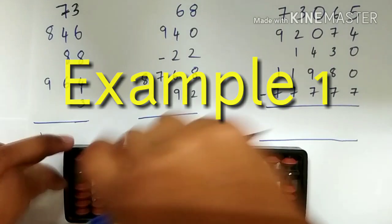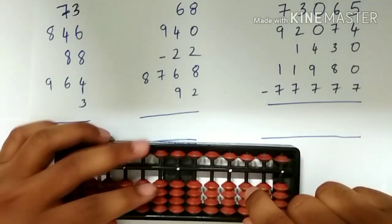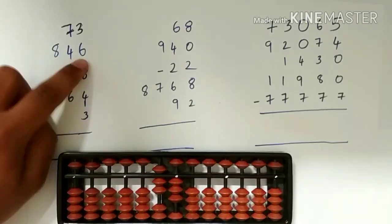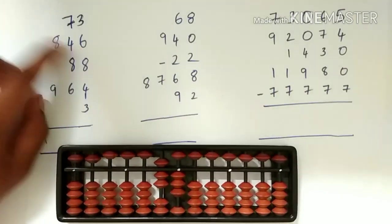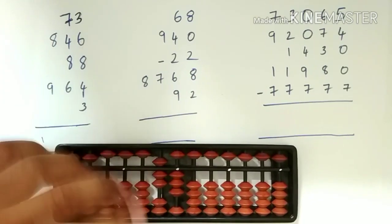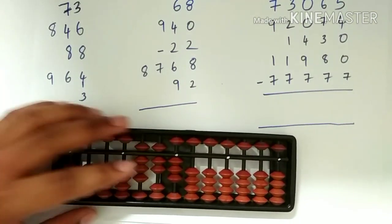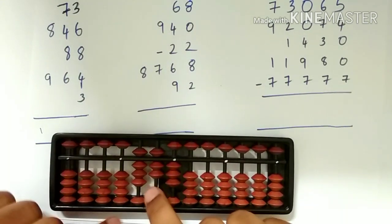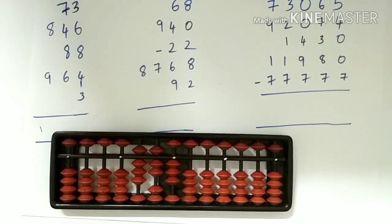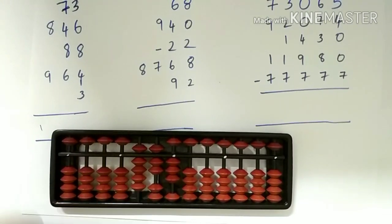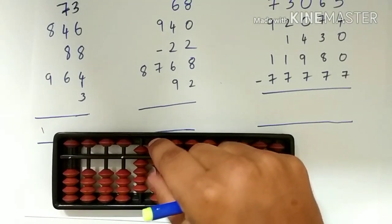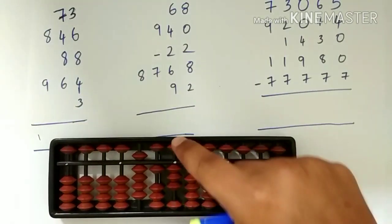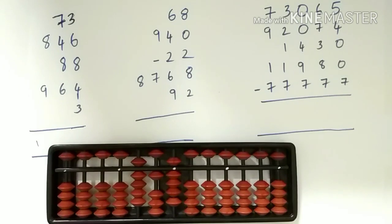So what we have here is 73. Let's place 73 on the abacus. We have to add 846, which is a 3 digit number. So placing 8 on the 100th rod. Now we have to add 4 on the 10th rod, so we have to use the big friends concept. Add the friend 10 and less the friend 6. Then we have to add 6 on the units rod. We got 919.